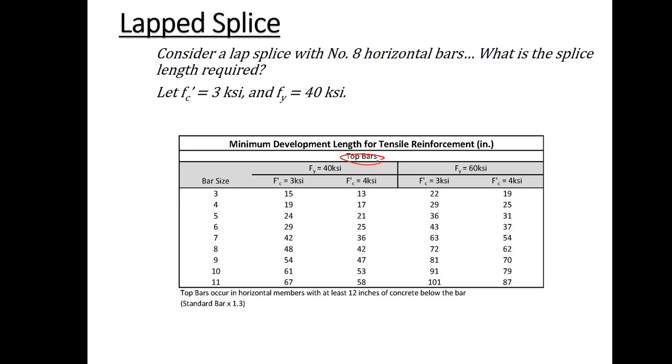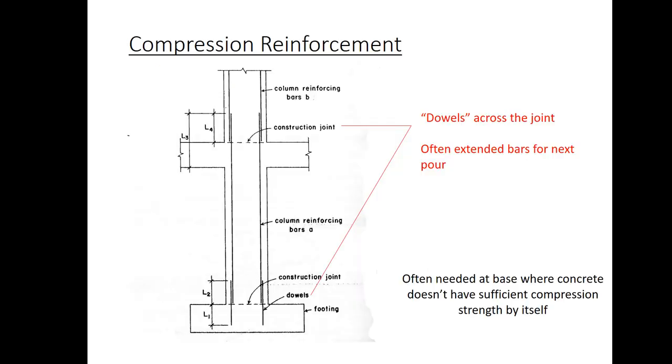Okay, so here's a quick example. This is the top bar table, as we indicated there. We've got 3,000 PSI concrete and 40,000 PSI steel. And we're using number 8 horizontal bars, so my lap splice would have to be 48 inches. 48 inches of overlap that would occur there.